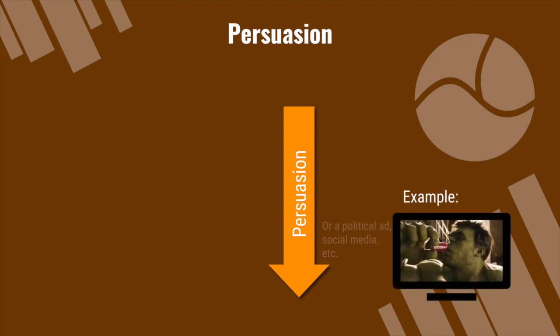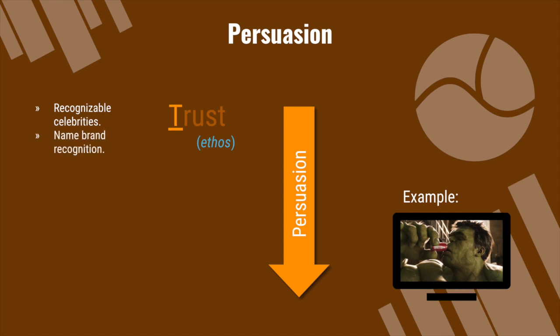Let's illustrate that with an example. There's an old commercial that featured the Hulk and Ant-Man in a Coca-Cola commercial — this could also apply to a political ad, social media, or anything else. First, let's think about trust. The advertisement uses recognizable celebrities and name brand recognition, appealing to your sense of trust. You already trust that these characters will provide pleasure and that this is a trusted name brand. By posting their logo on billboards, in Super Bowl commercials, or on the side of a race car, they build familiarity. That way, when you're in the store and you see Coca-Cola right next to Buffalo Bill's orange soda, you're probably going to pick Coca-Cola. We tend to choose familiar over strange, so advertisements try to build familiarity.